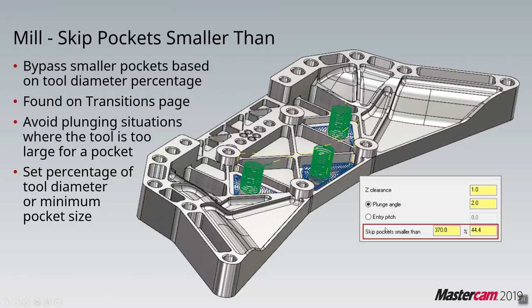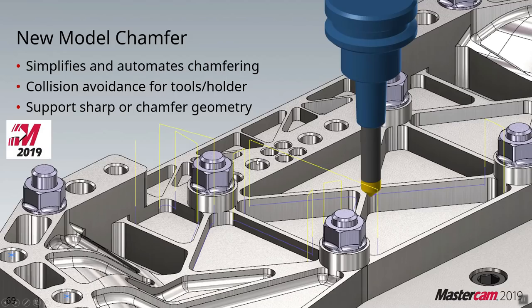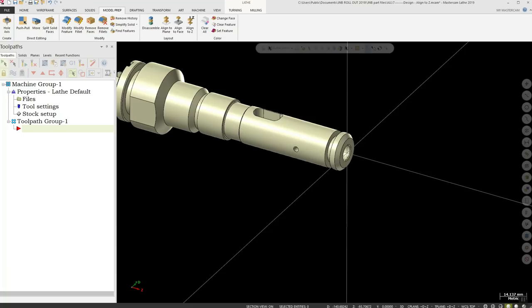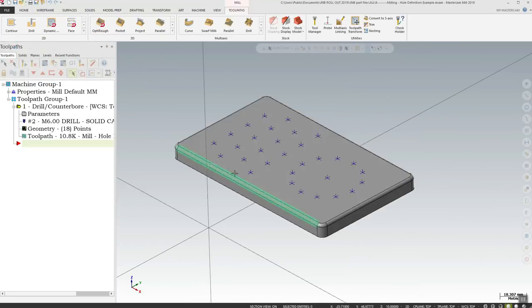We also now have the high speed equal scallop, which gives smoother motion than previous methods. Without the high speed equal scallop, when getting close to a vertical edge the step over could sometimes become erratic. With the new high speed equal scallop that issue is largely eliminated. We can also chamfer solid models — very similar to standard chamfer but with the intelligence to recognize the entire solid when selecting geometry.